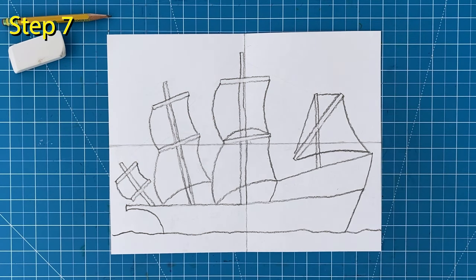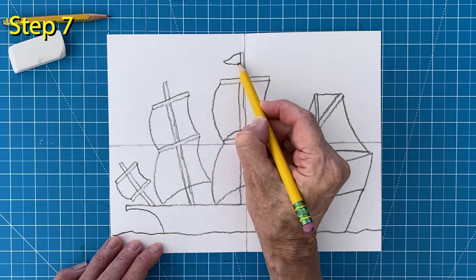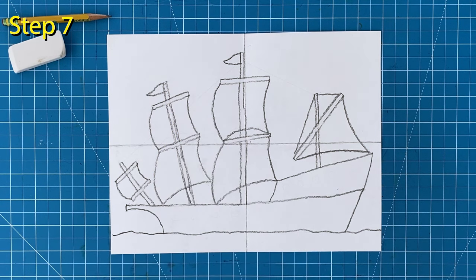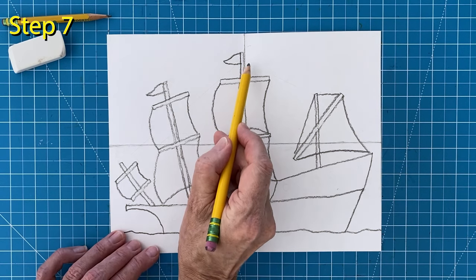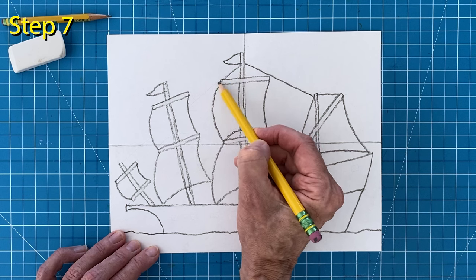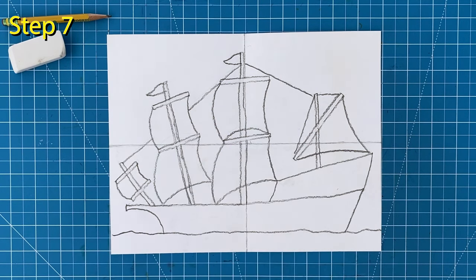Step number seven. Another fun detail to add are the small flags on the top of the poles. Notice they need to point to the left because that is the way the wind is blowing with these sails. Next add two lines that connect the center pole to the two outside ones. I think in real life there are many more but two will do just fine for our drawing here.